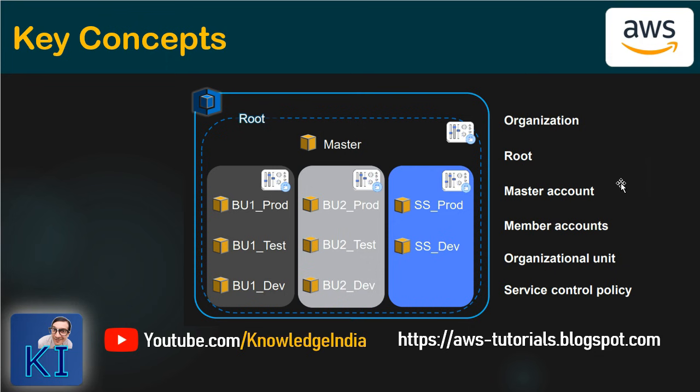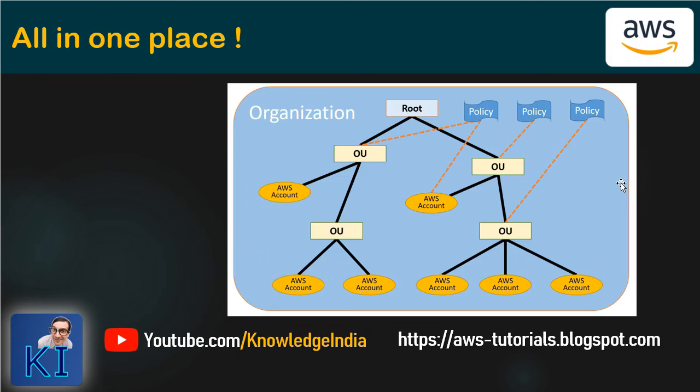Let's talk about important concepts related to Organizations. From any one account you create an organization — that becomes the master account. Multiple other AWS accounts then join this organization and are called member accounts. You can also create groups of accounts called Organizational Units, or OUs. The policies you apply from the organization are called SCPs — Service Control Policies.